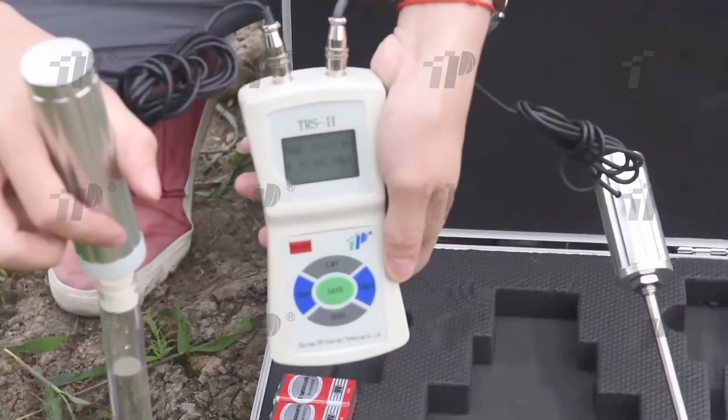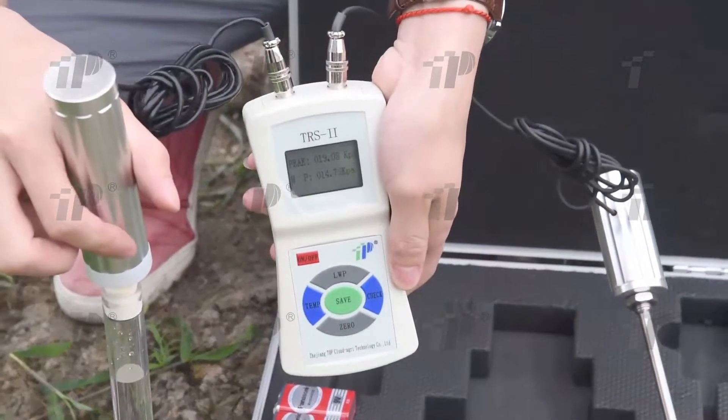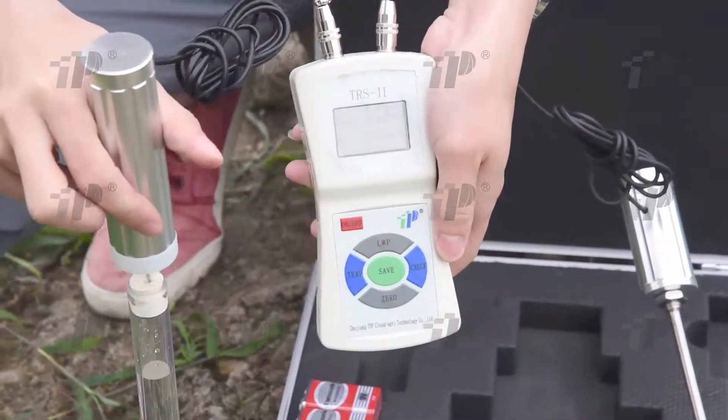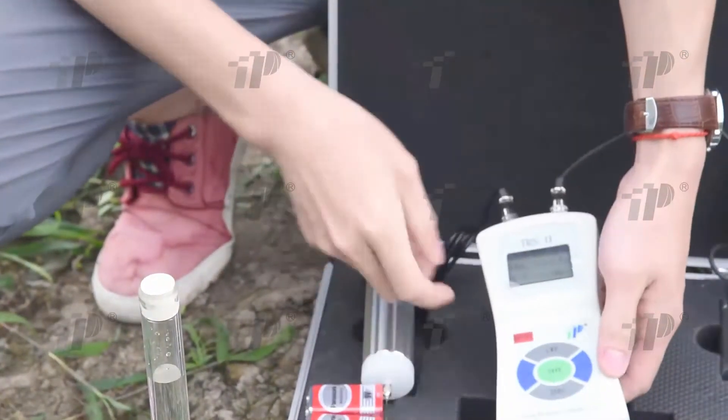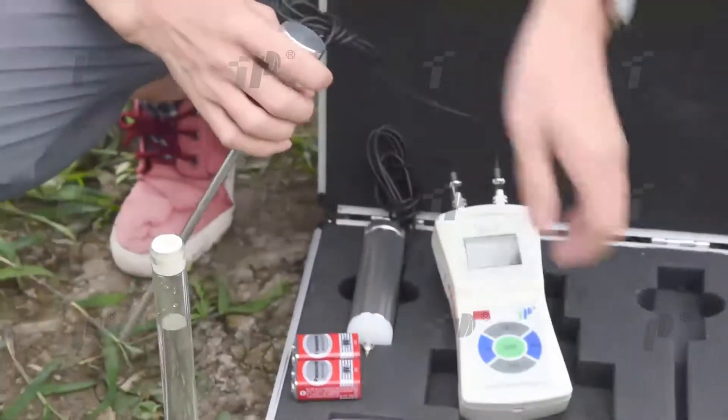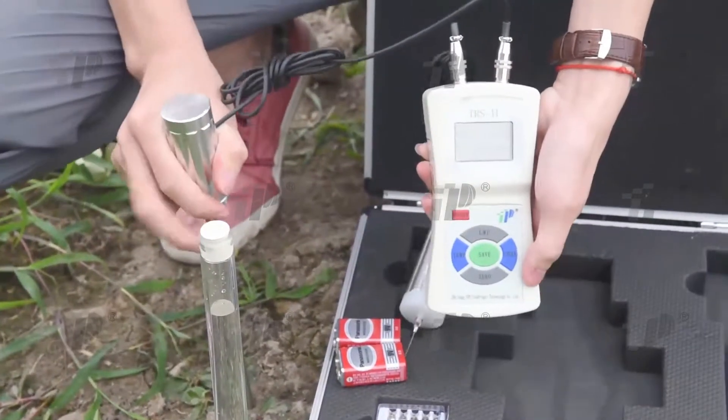After water penetrates to every water potential probe rubber stopper one by one, you can read each measuring point's water potential data from the LCD. Readings should be taken in the morning when temperature changes are smaller.